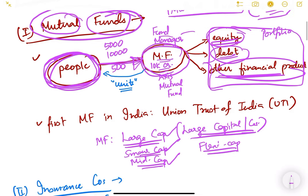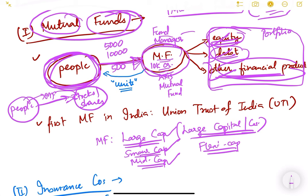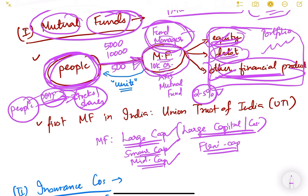Instead of people directly investing into stocks or shares, they give their money to the mutual fund, which then invests on their behalf. People don't have to track the day-to-day movement of equity and shares because they are busy — the mutual fund manager handles all that work. He will charge a commission of two to five percent, but it is considered a safe investment for common people.